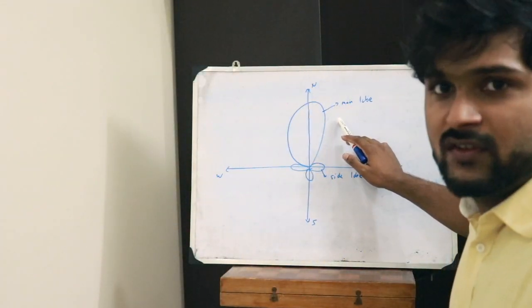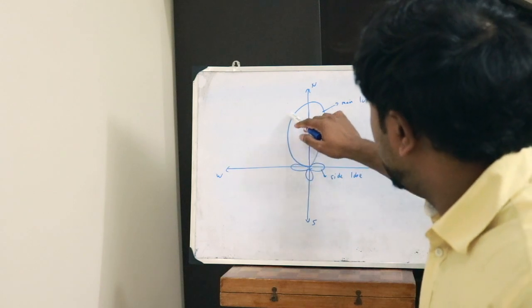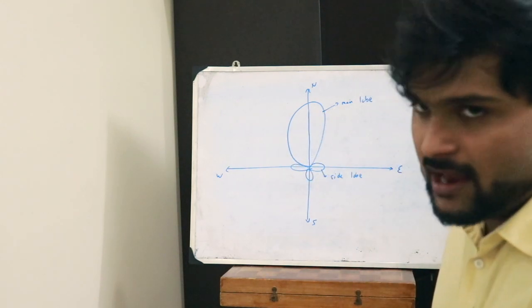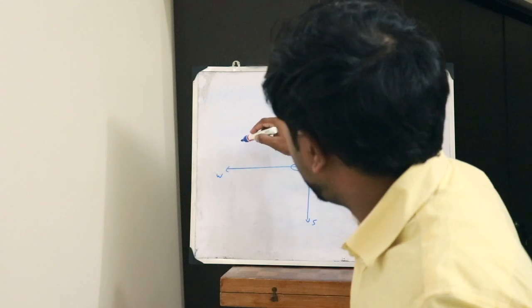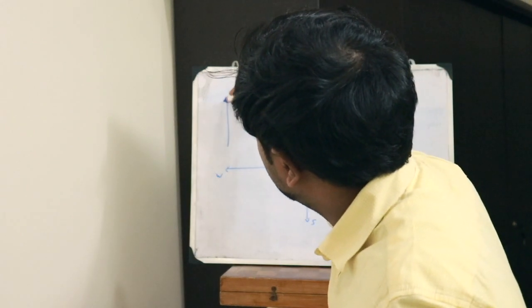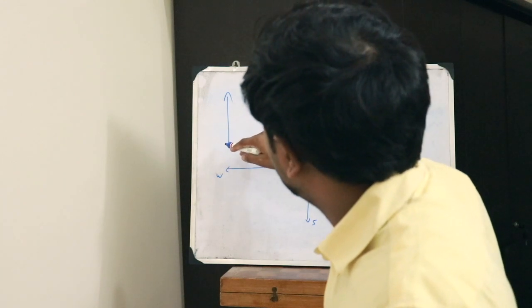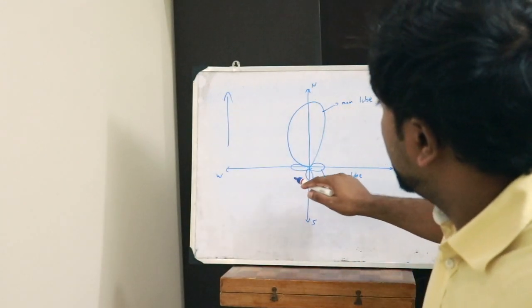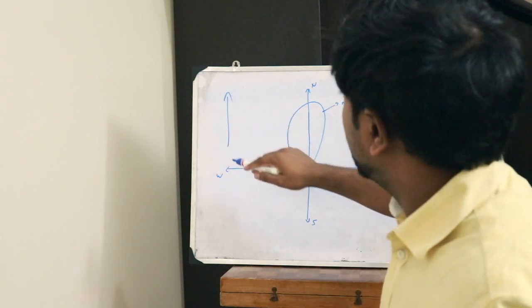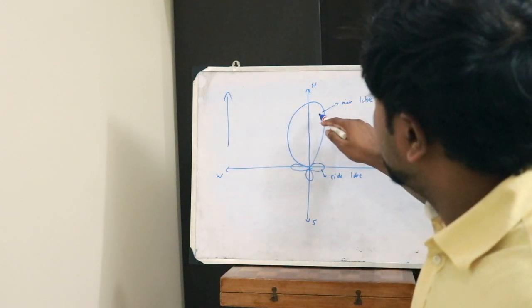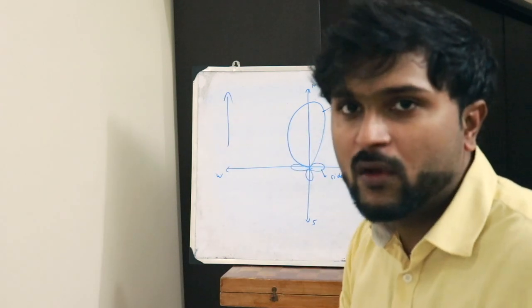So here this is said to be the main lobe and this is said to be a side lobe. So let us assume that this antenna is propagating towards this direction. The main lobe must be maximum towards this direction. This indicates that this has got a maximum intensity towards this direction.